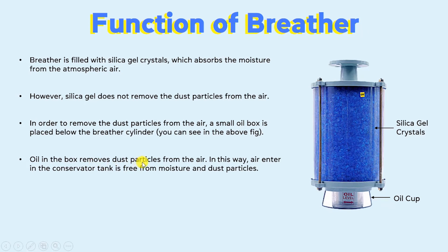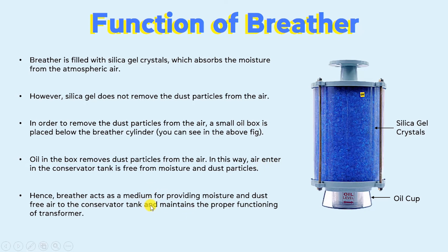The oil in the cup removes the dust particles from the air. In this way, the air entering the conservator tank is free from moisture and dust particles. In the breather, silica gel crystals are used to remove moisture from the atmospheric air, whereas oil removes the dust particles. Hence, we can say that the breather acts as a medium for providing moisture- and dust-free air to the conservator tank and maintains the proper functioning of the transformer.